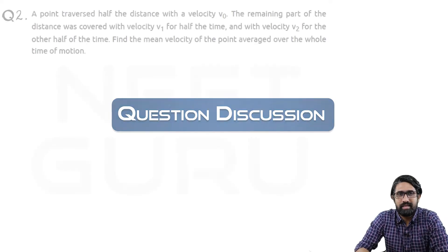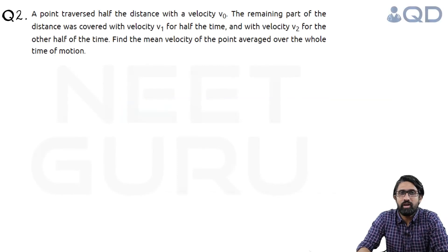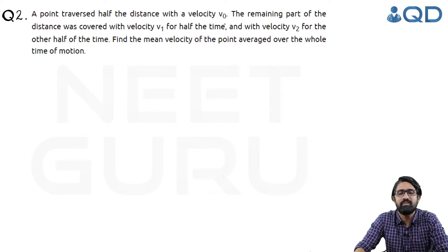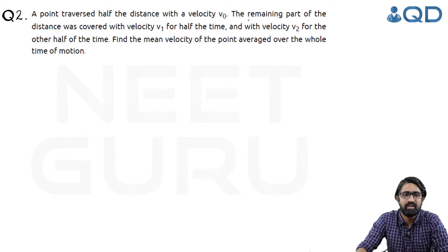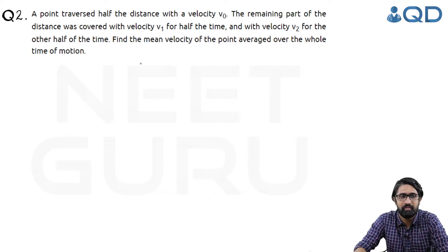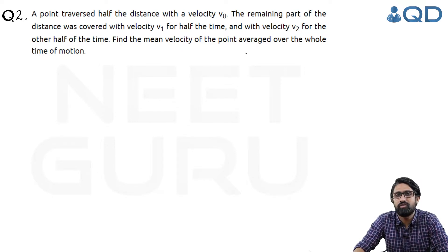The second question here says: a point traversed half the distance with velocity v0. The remaining part of the distance was covered with velocity v1 for half the time and with velocity v2 for the other half of time. Find the mean velocity of the point averaged over the whole time of motion.